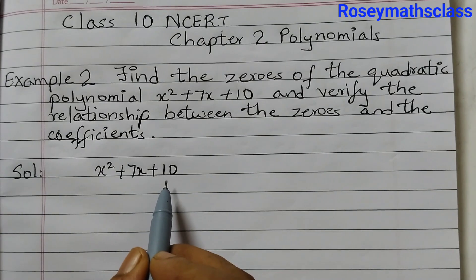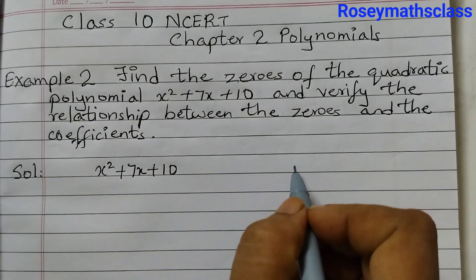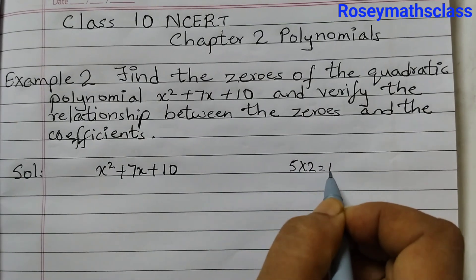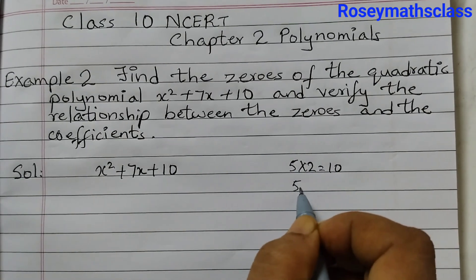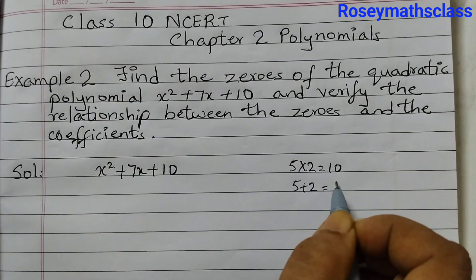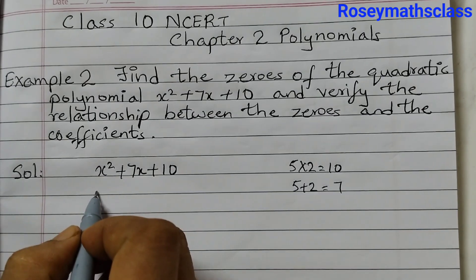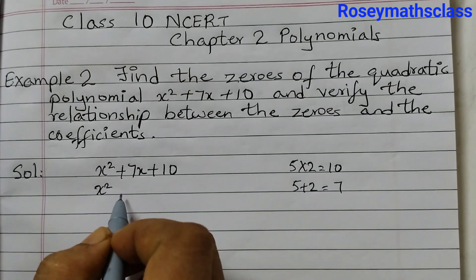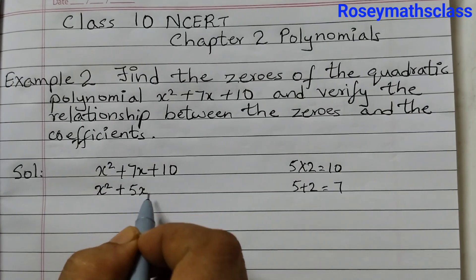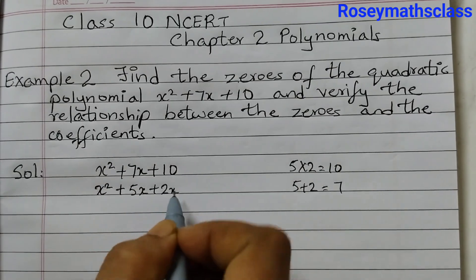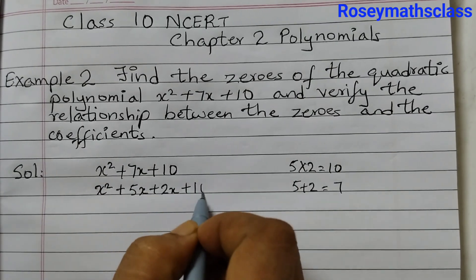We need two numbers which multiplied gives 10 and added gives 7. So if I do 5 into 2 that equals to 10 and 5 plus 2 is equal to 7. So split the middle term x squared plus 5x plus 2x plus 10.